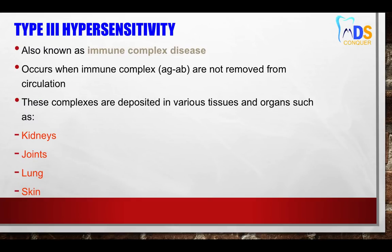Type 3 is called immune complex-mediated hypersensitivity. It occurs due to antigen-antibody complexes that are not removed from the circulation, and is most commonly seen in kidneys, joints, lungs, and skin.